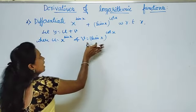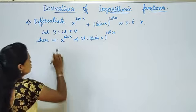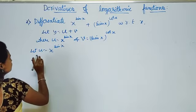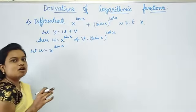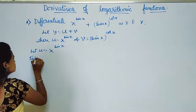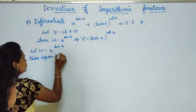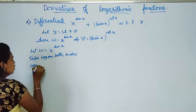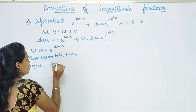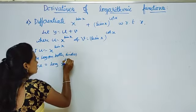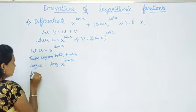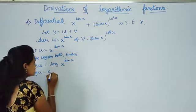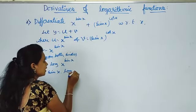Consider u equals x power sin x. Take log on both sides. So log u equals log of x power sin x. Using the logarithmic property, this can be written as sin x into log x.